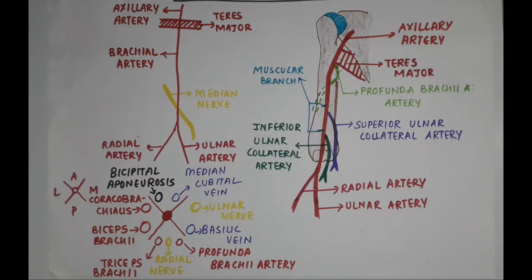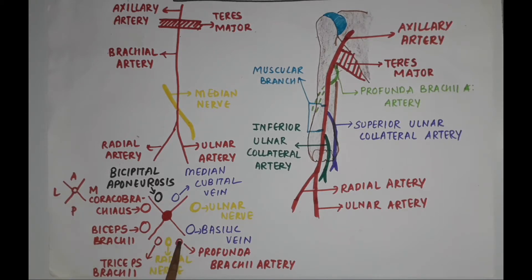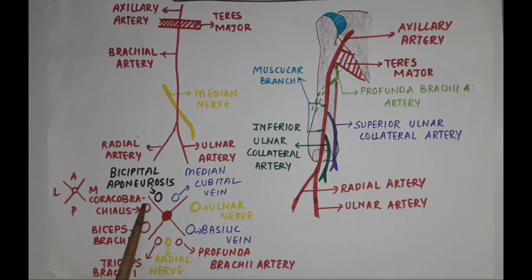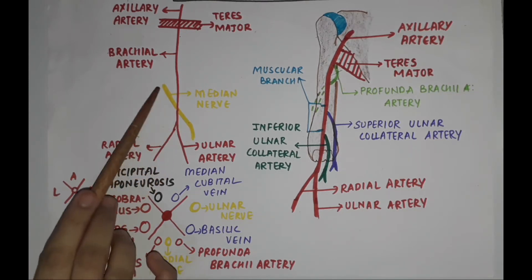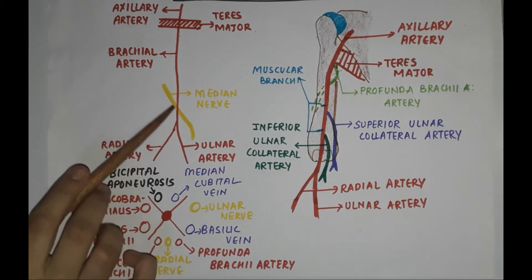Relations. The brachial artery is superficial throughout its extent and is accompanied by two venae comitantes. Anteriorly, in the middle of the arm, it is crossed by the median nerve from the lateral to the medial side. This yellow color nerve is the median nerve.